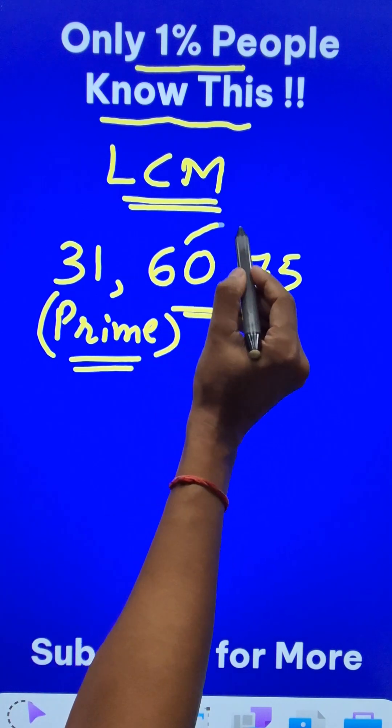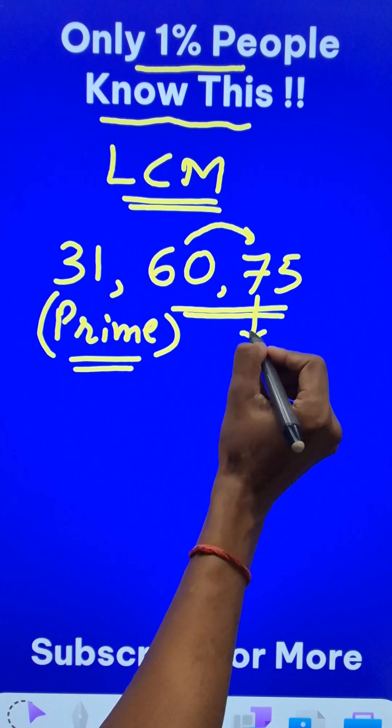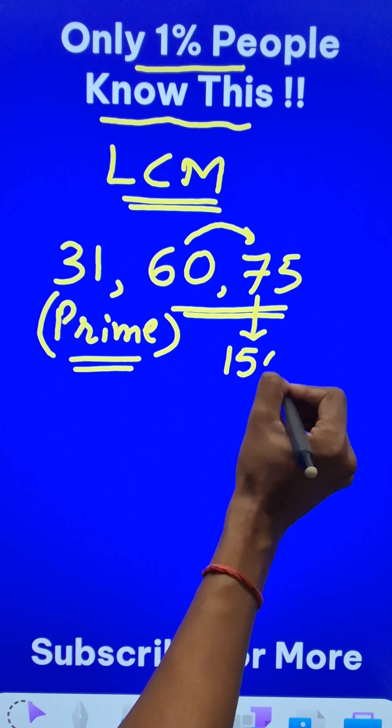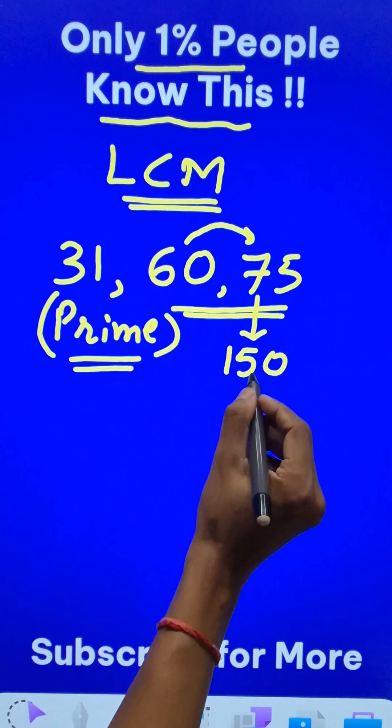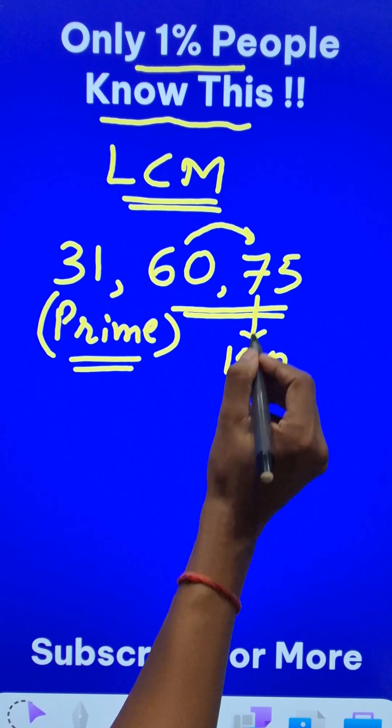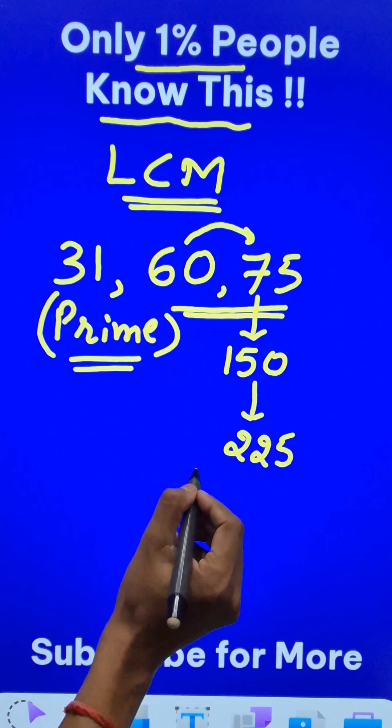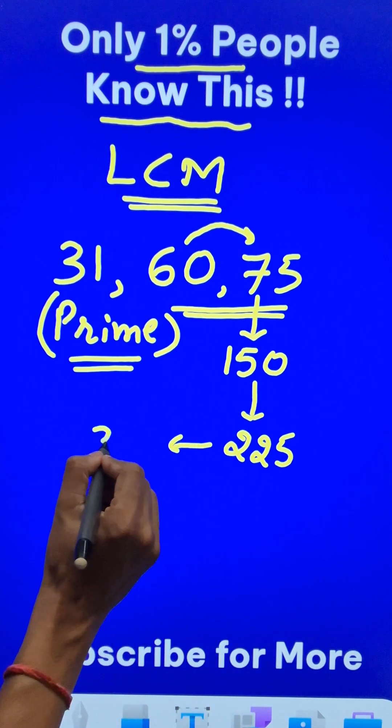Now 60 doesn't divide 75 exactly. The next multiple of 75 is 150, and 60 does not divide 150 either. The next multiple of 75 is 225. The next multiple is 300.